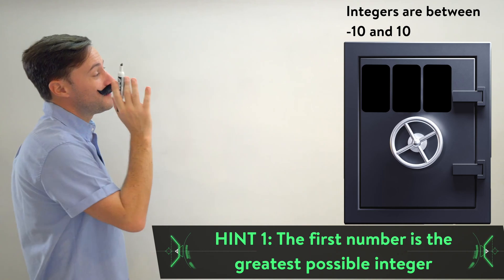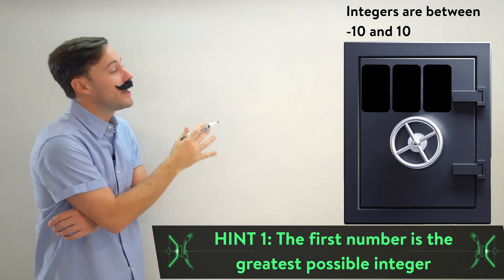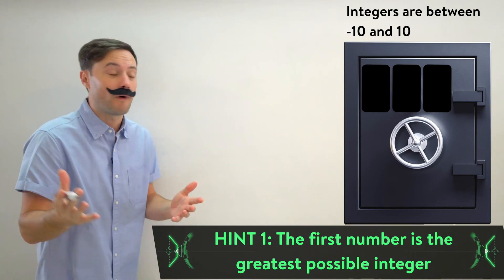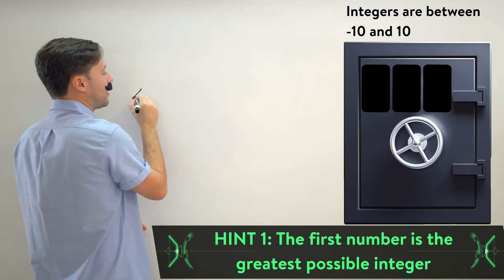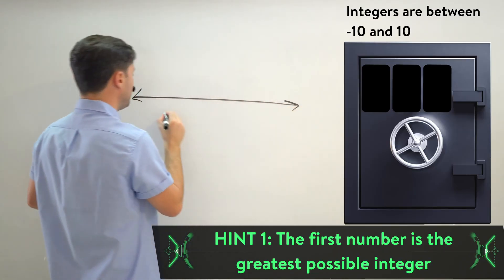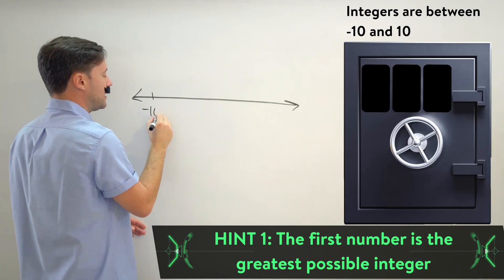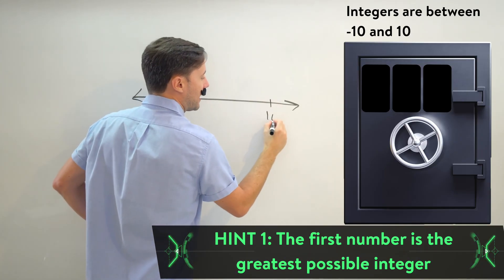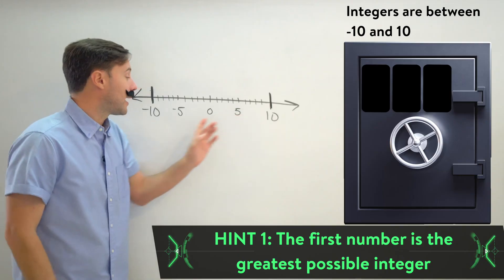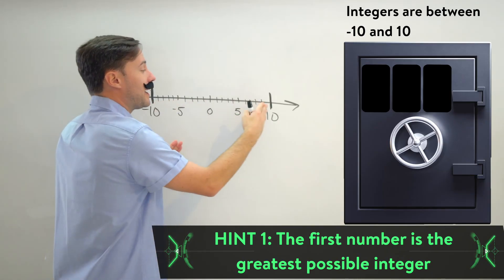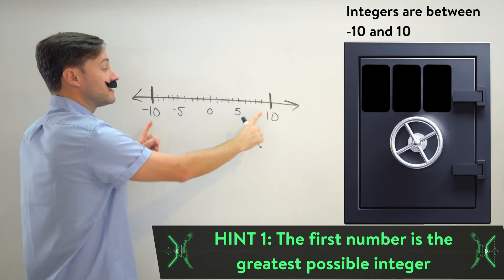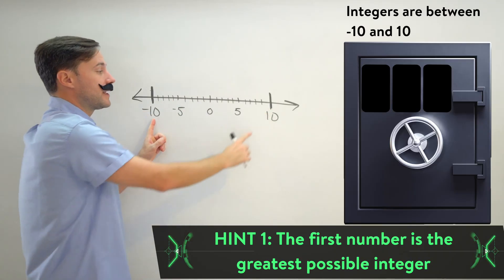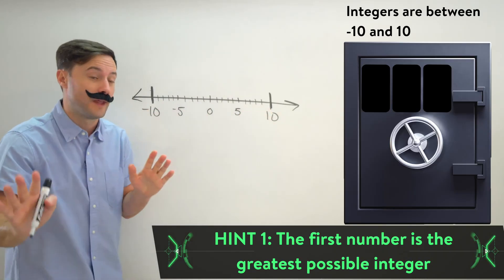All right, the first hint. The first digit is the greatest possible integer. Okay, well we know that the integers for the combo are going to be between negative 10 and 10. All right, so this number line represents all the possible integer values that we could get, all these little dashes. It has to be in between negative 10 and 10, so it can't include that.